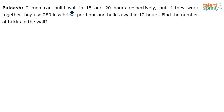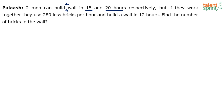Two men can build a wall in 15 and 20 hours respectively. But if they work together, they build the wall in 12 hours. So one person can do the job in 15 hours, the other takes 20 hours, and working together they finish in 12 hours.